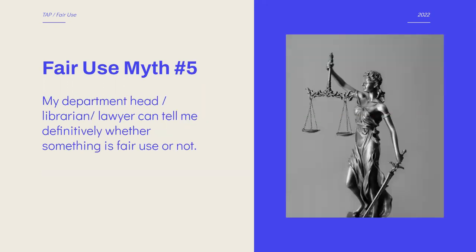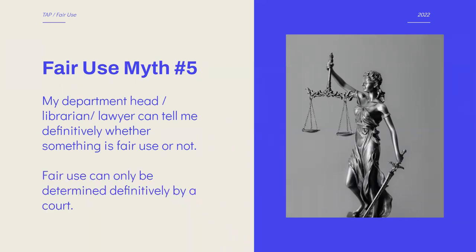Fair use myth number five: my department head, librarian, or lawyer can tell me definitively whether something is fair use or not. Fair use can only be determined definitively by a court. And sometimes when things are settled out of court, we don't always find out whether or not they were ruled in favor of fair use. So really the only way we can definitively know if a use is considered fair use is through a court determination.